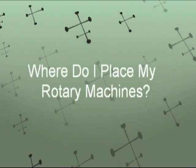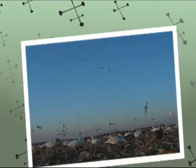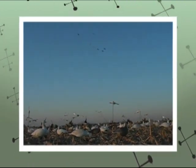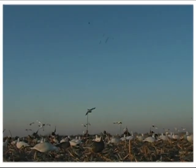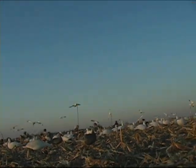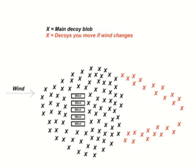So once you get your hands on one of these, where are you going to put it at? You want to put that rotary machine within your spread based upon what the wind is like in relation to your blinds. Last week I showed you the diagram and it's up on your screen right now about how I set my snow goose decoys. You see where my blinds are at? In front of my blinds, downwind of my blinds is a kill hole.